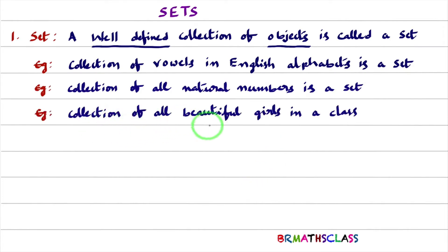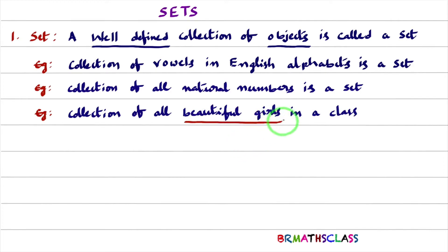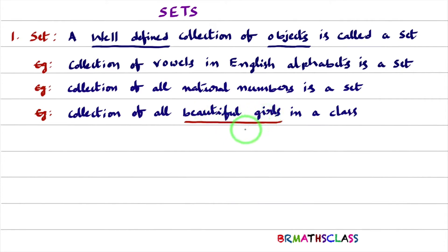Now observe this: collection of all beautiful girls in a class. The point is, 'beautiful girl' is well defined or not? If we consider a particular girl, that girl may be beautiful to you, but the same girl may not be beautiful to your friend. So 'beautiful girl' is not well defined. Therefore, the collection of beautiful girls in a class is not a set.